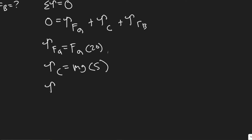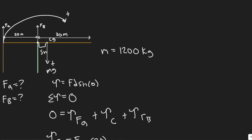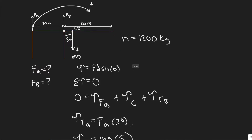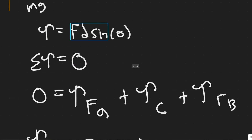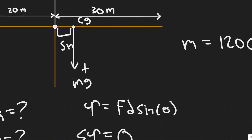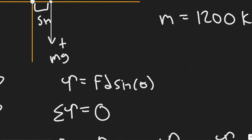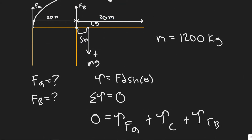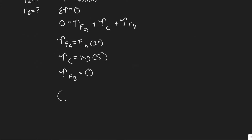The torque due to force B is zero, because force B is directly on our axis of rotation. Since the distance D from the pivot point is zero, the entire torque term goes to zero. So our torque equation becomes: FA times 20 plus 5mg plus zero equals zero.